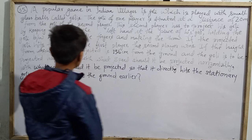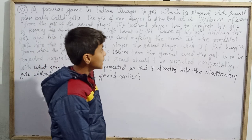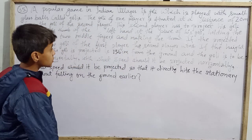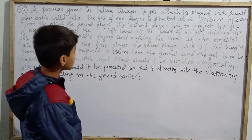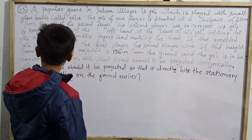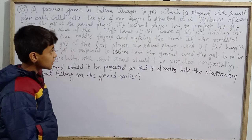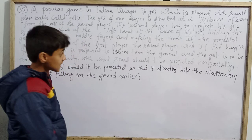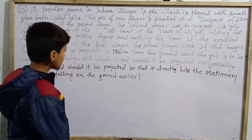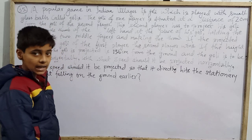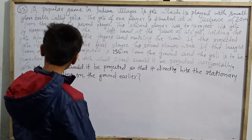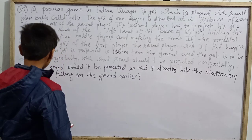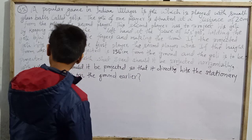A popular game in Indian villages is Goalie, which is played with small black balls called goalies. The goalie of one player is situated at a distance of 2.0 meters from the goalie of the second player. This second player has to project his goalie by keeping the thumb of the left hand at the place of his goalie, holding the goalie between his two middle fingers and making the throw. If the projected goalie hits the goalie of the first player, the second player wins. The height from which the goalie is projected is 19.6 cm from the ground, and the goalie is to be projected horizontally — with what speed should it be projected?